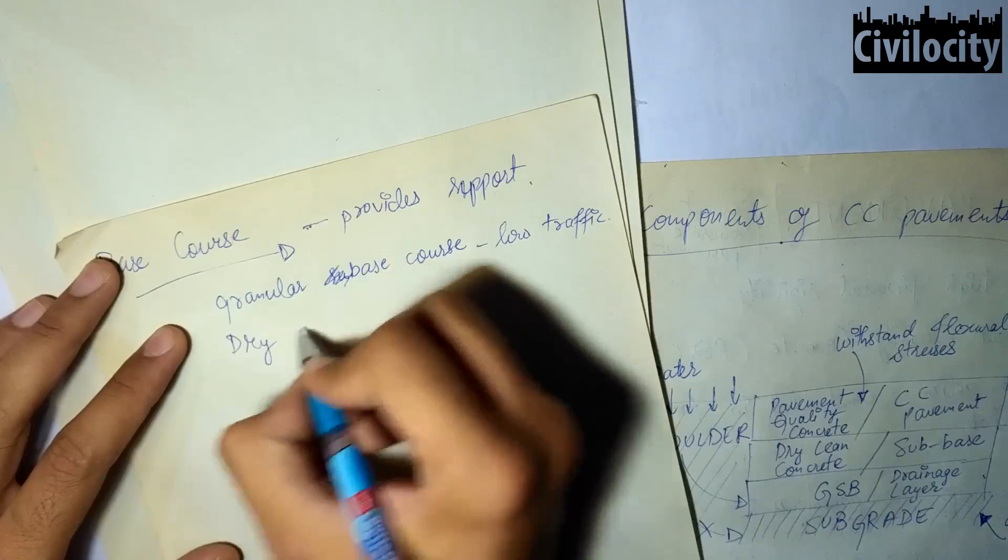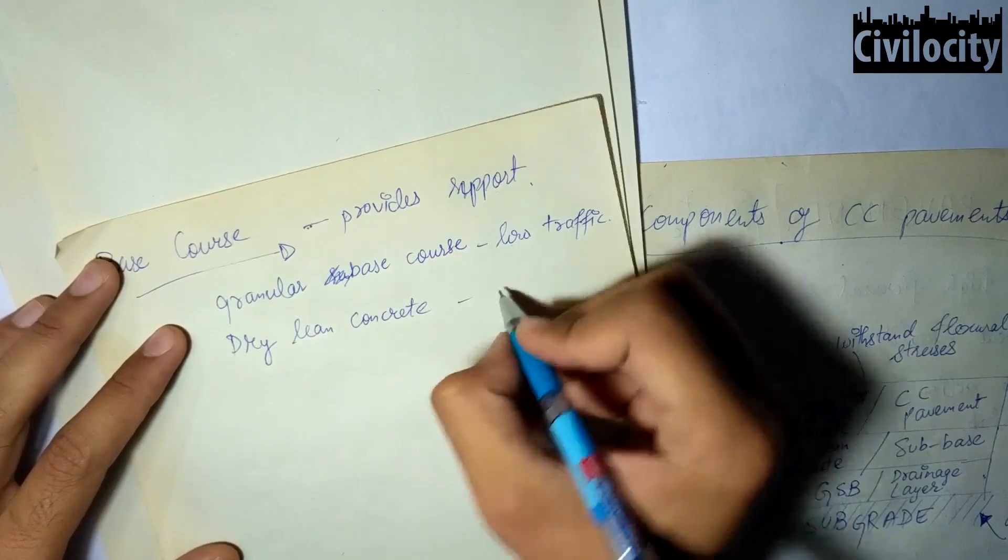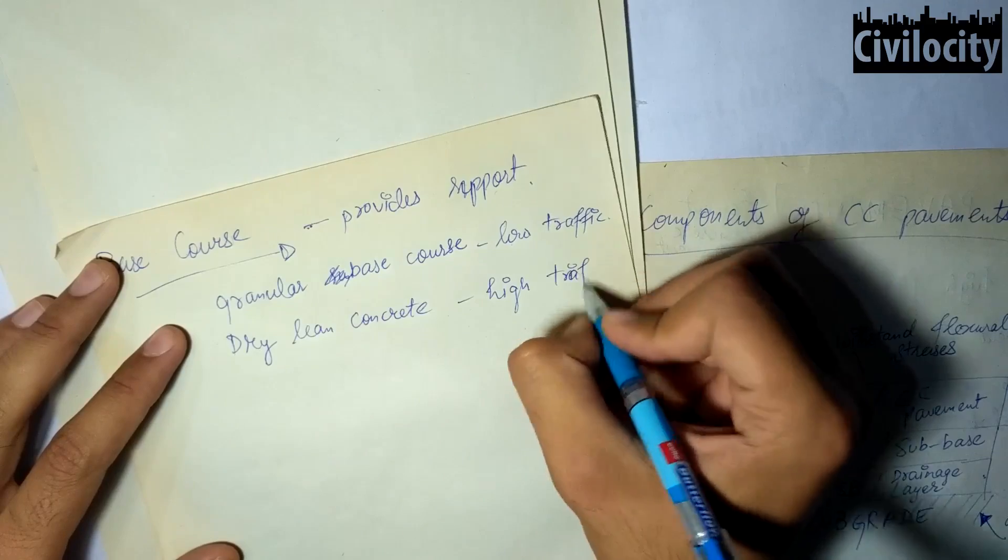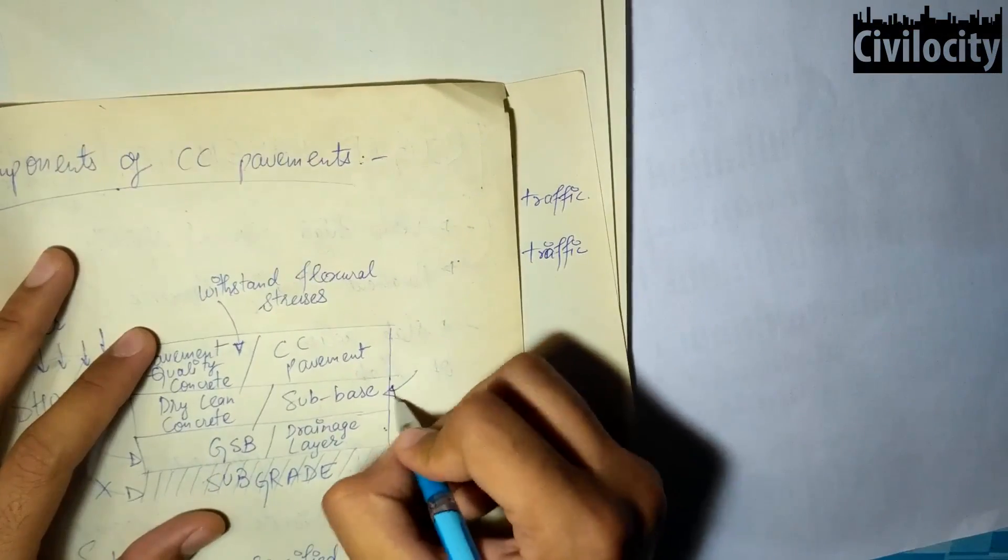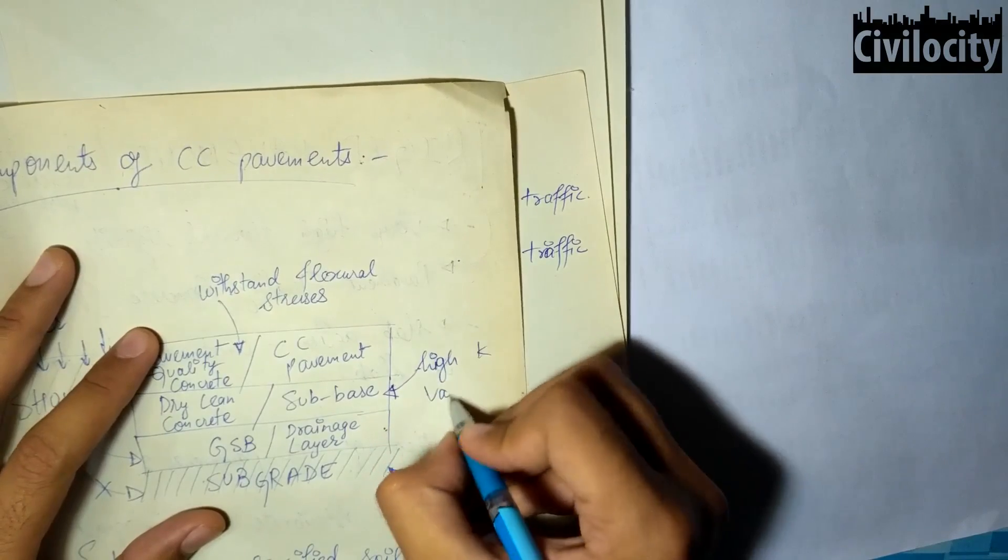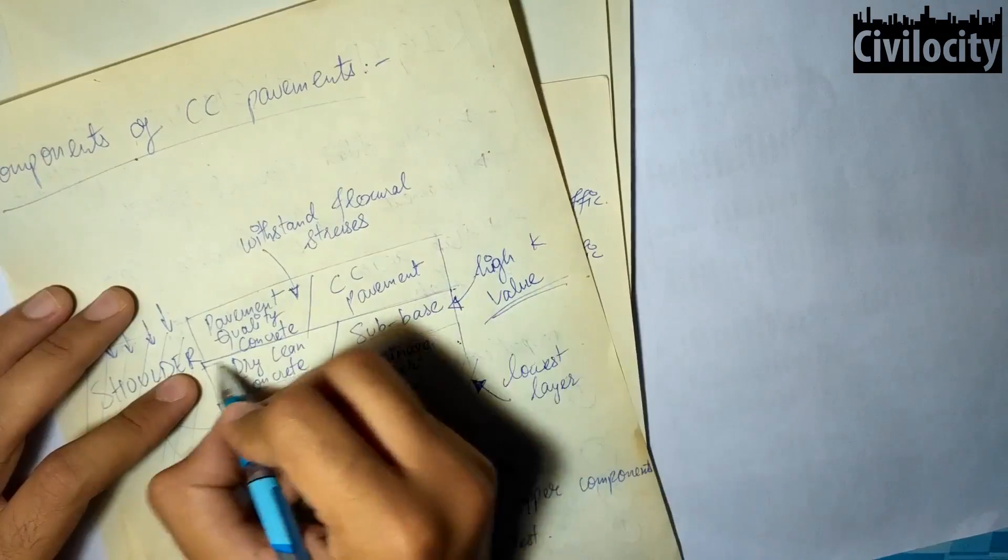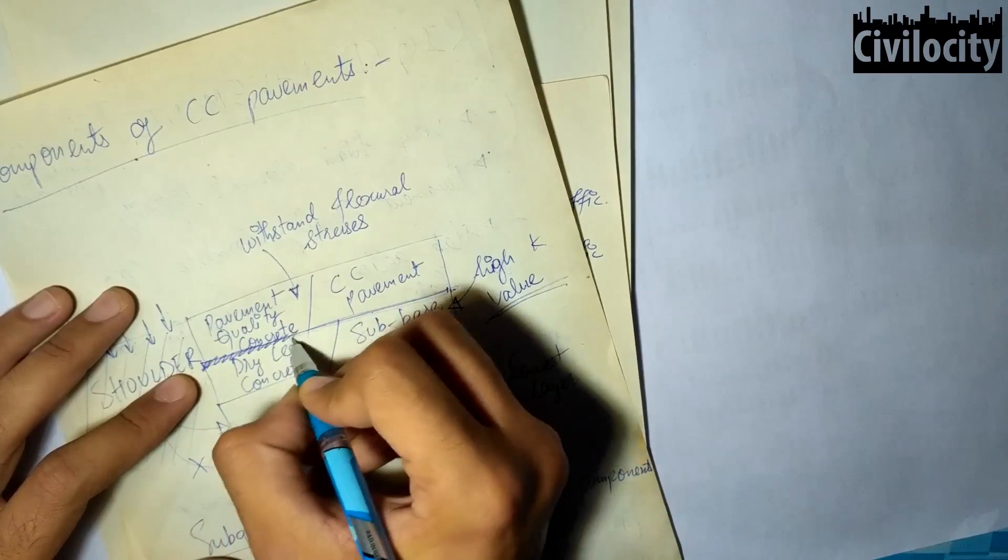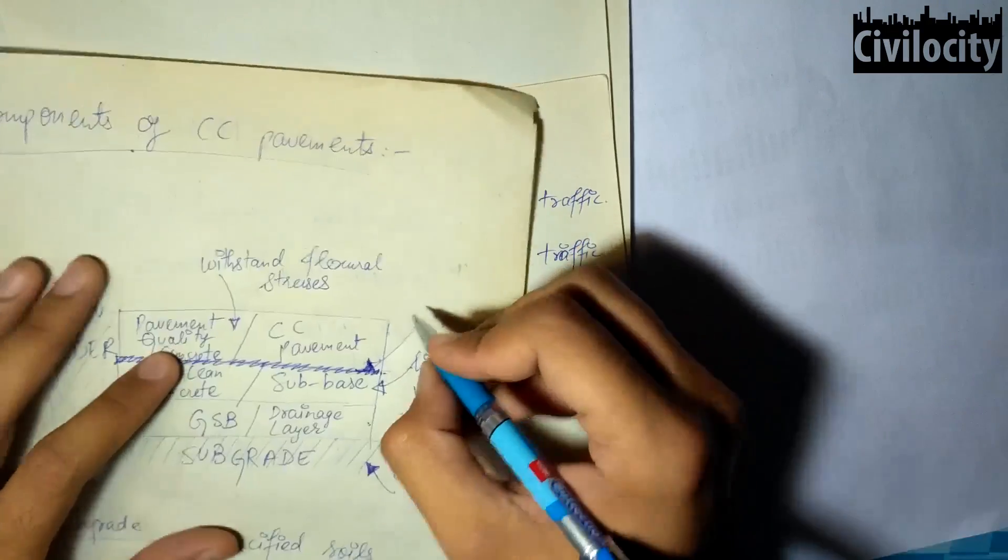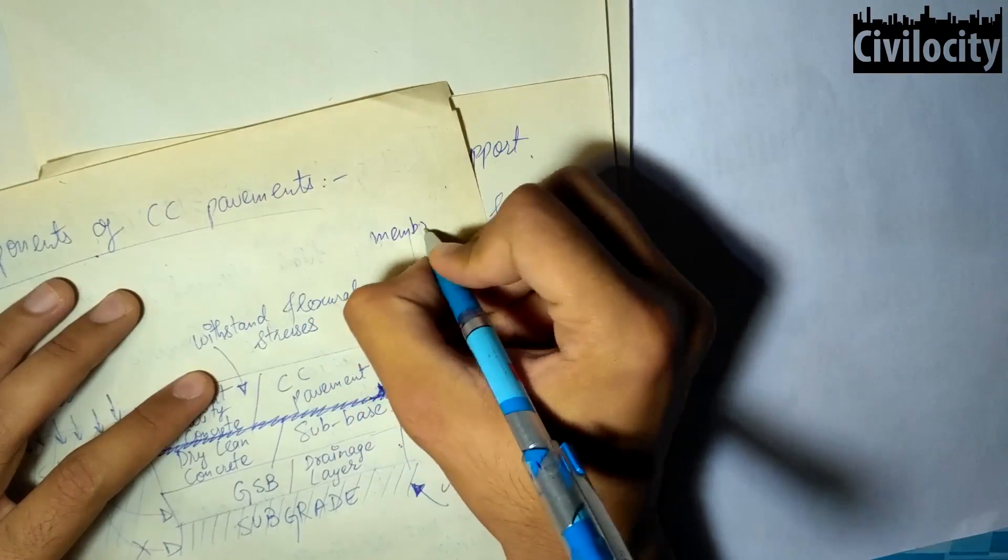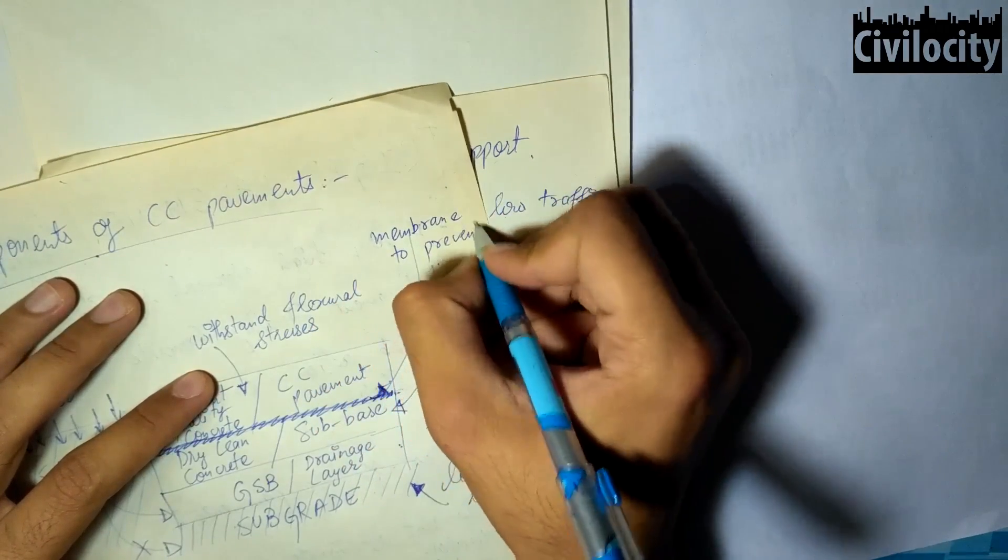Generally granular base course is used for low traffic areas whereas dry lean concrete is used for high traffic areas because it provides a uniform support and high value of modulus of subgrade reaction. Also it provides excellent working platform for laying the PQC slab, that is pavement quality concrete slab. A separation layer consisting of suitable type of membrane is laid over DLC base course before laying the PQC slab in order to prevent bonding between the two.